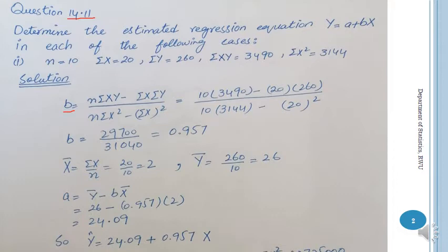For Part 1, the formula selected is: b = [n·Σxy − Σx·Σy] / [n·Σx² − (Σx)²]. Because the information given is in variable form, this formula is appropriate. After substitution and calculation, a = 24.09, so the estimated line is ŷ = 24.09 + 0.957x.